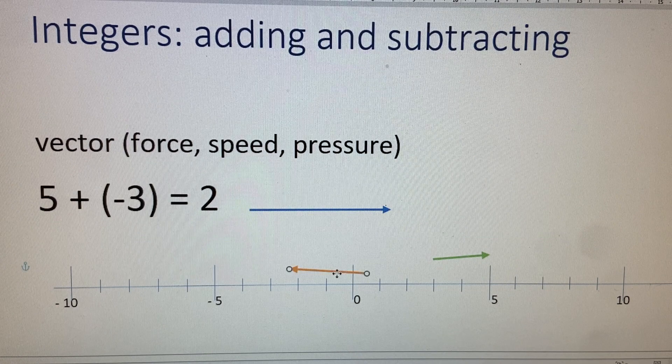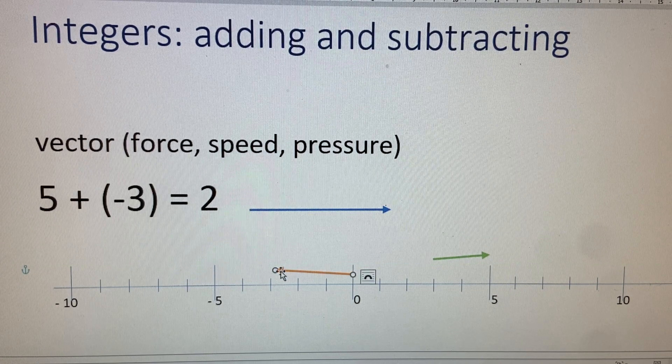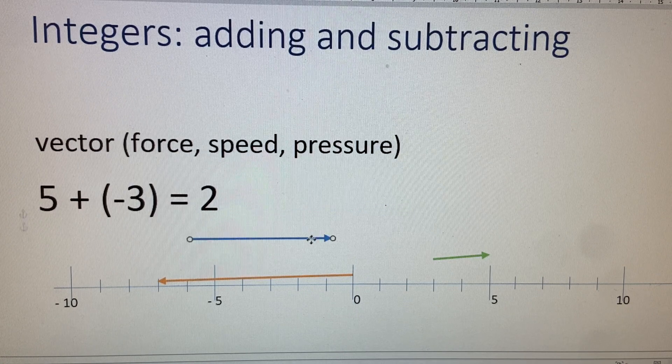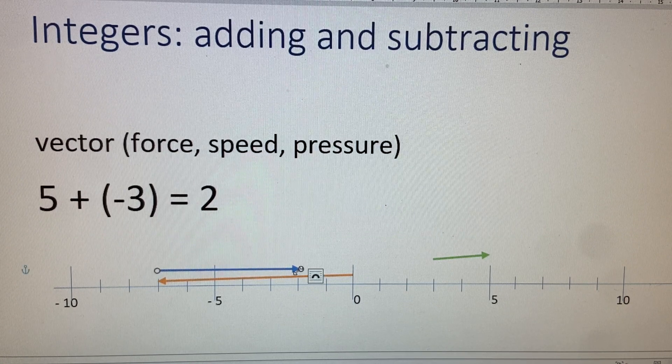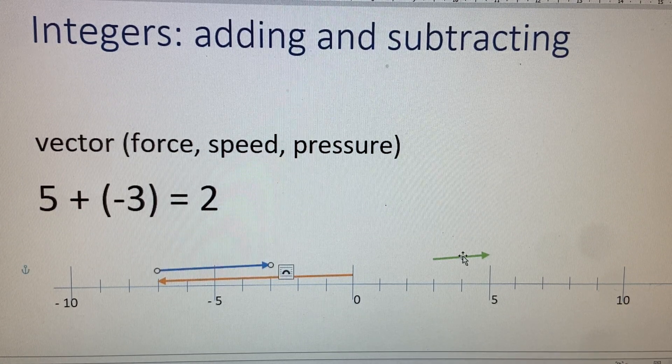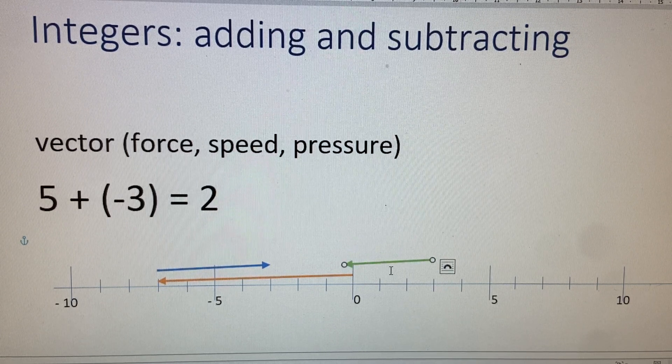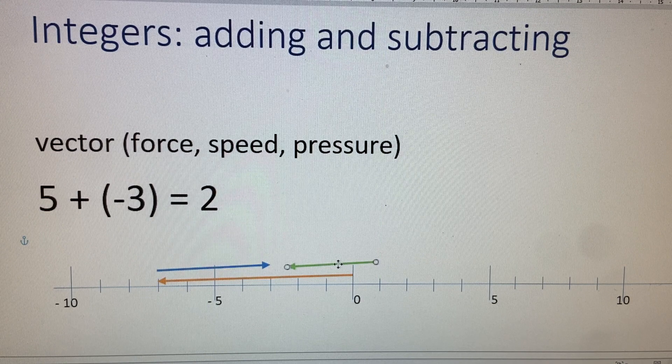So if we have a negative seven, and to this we add the positive four, we have a resultant vector that's pointing from the right to the left. So it's gonna be a negative number.